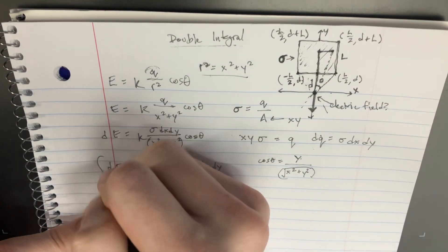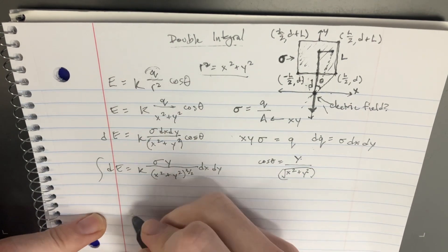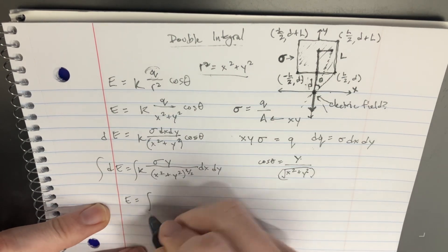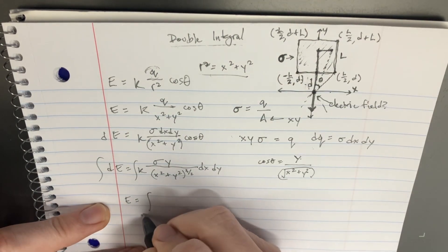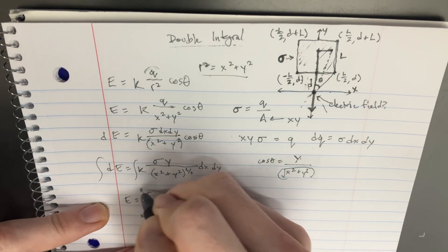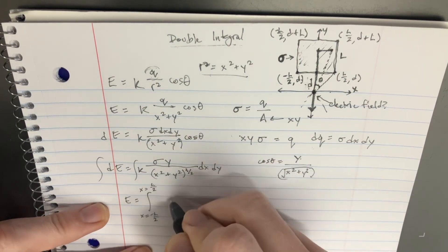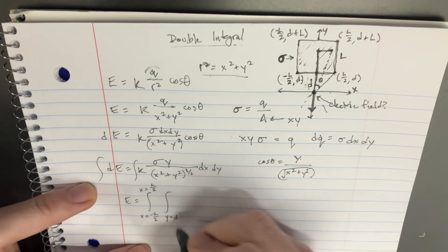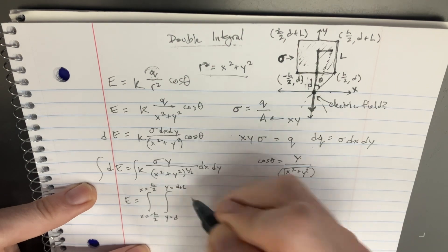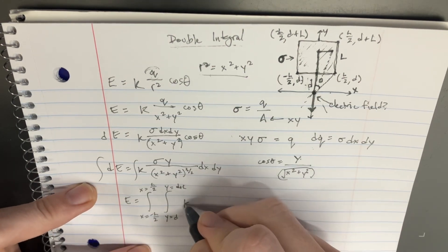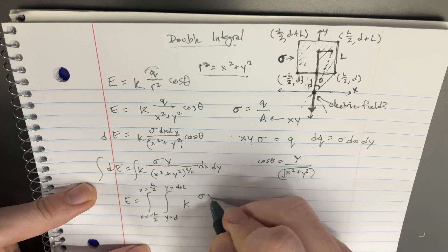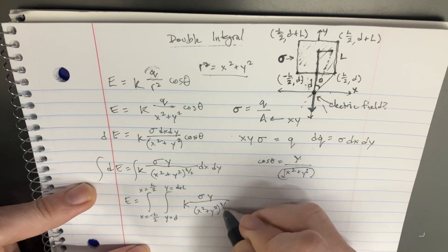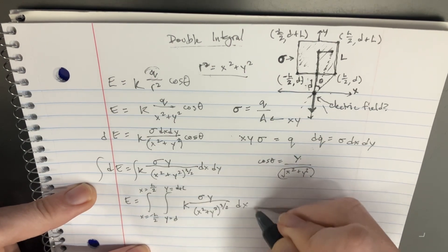And if we wanted to finish this off and plug in the integration limits on both sides, then we would say e is going to be equal to, from x equals negative l over 2 to x equals l over 2. And then you have the next one, which would be y equals d, and then y equals d plus l. And then you just plug in this, so it's k density y over x squared plus y squared, 3 over 2, and then finish it off with a dx and a dy.